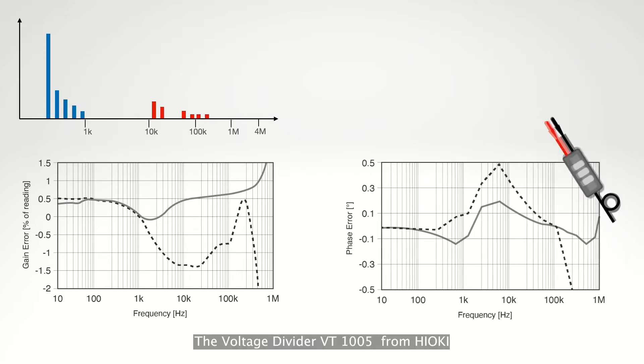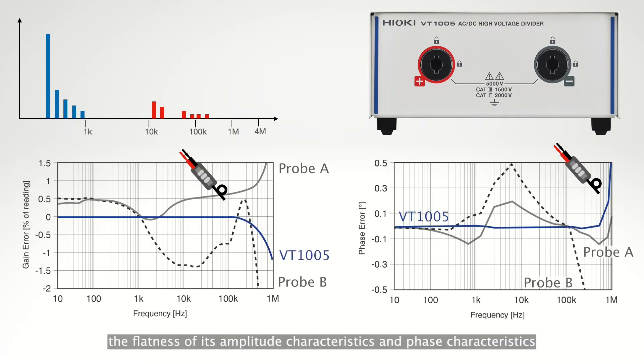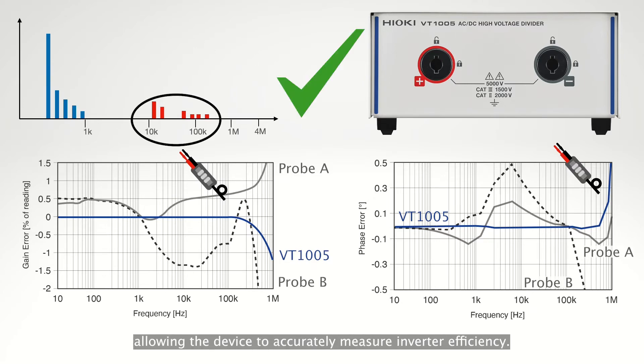The voltage divider VT1005 from Hioki has a flat frequency characteristic. The flatness of its amplitude characteristics and phase characteristics is excellent throughout the high frequency band, allowing the device to accurately measure inverter efficiency.